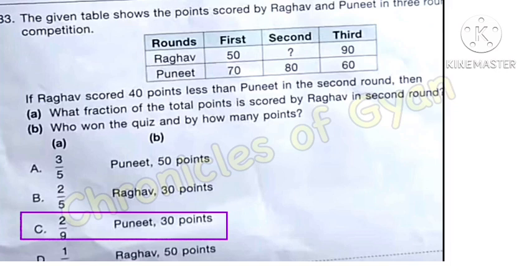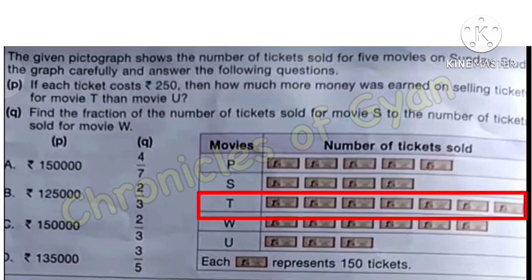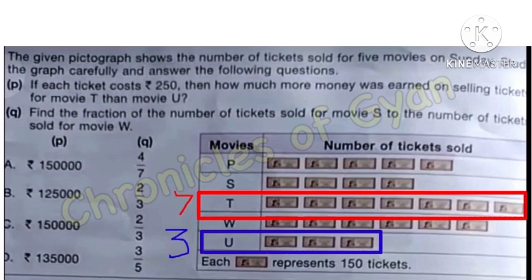Question 34: the given pictograph shows number of tickets sold for 5 movies on Sunday. Question B: if each ticket costs ₹250, how much more money was earned selling tickets for movie T than movie U? Movie T had 7 symbols and movie U had 3 symbols. T minus U = 7 minus 3 = 4. Each symbol represents 150 tickets, so 4 × 150 = 600 more tickets.